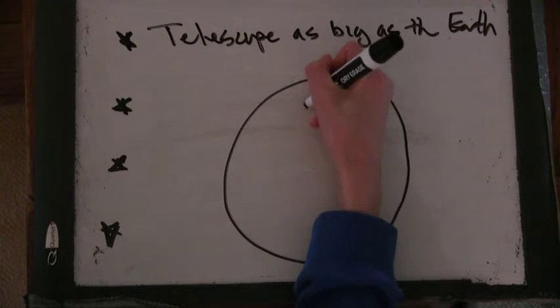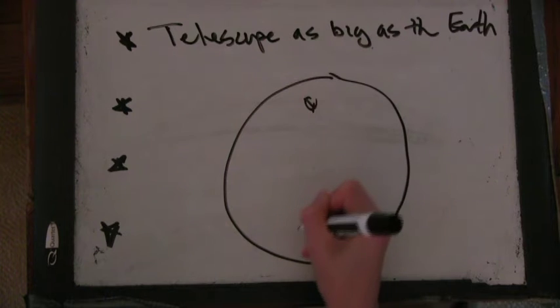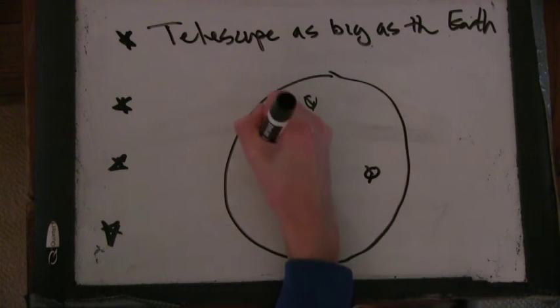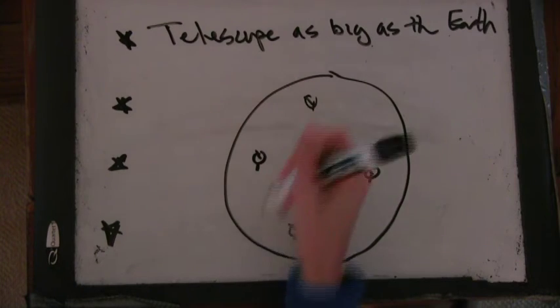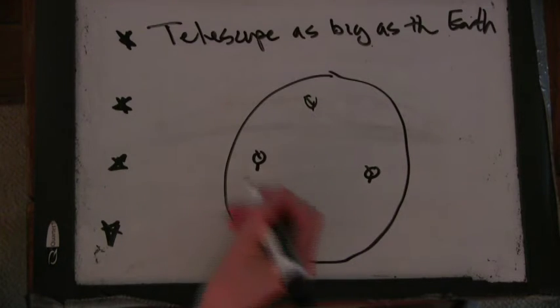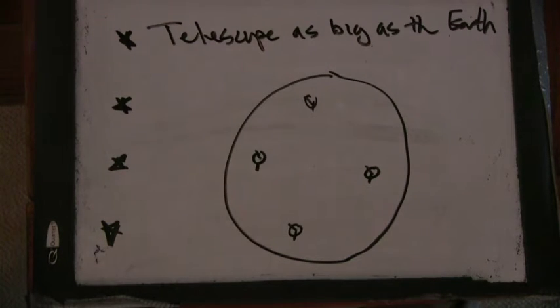But if you only have a few telescopes around the globe, maybe some on the back, you can still get an image because when the Earth rotates, you'll get different images, and you can gather all of that data to help form one image.